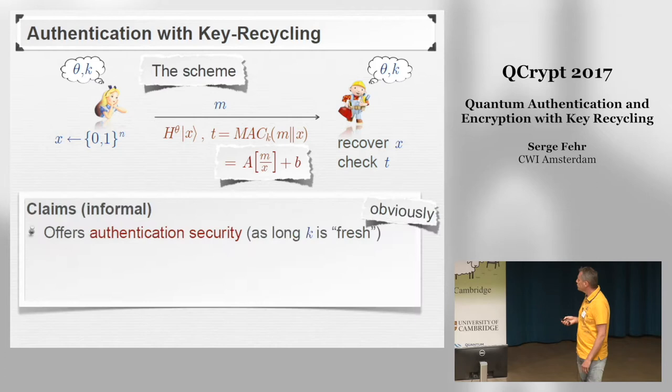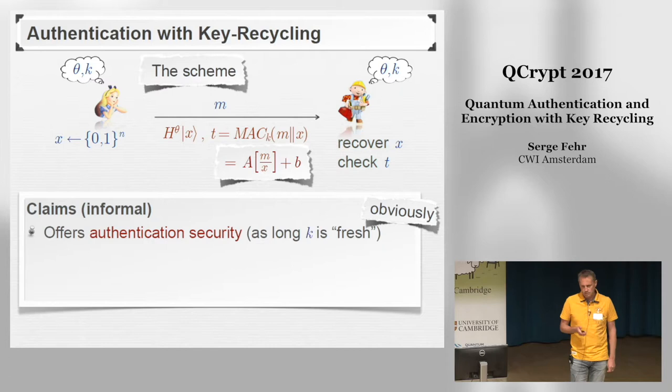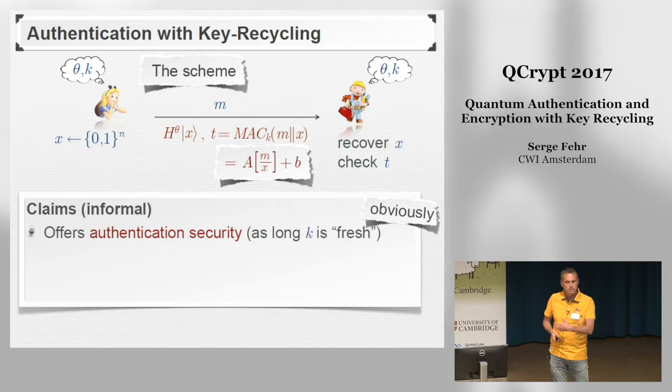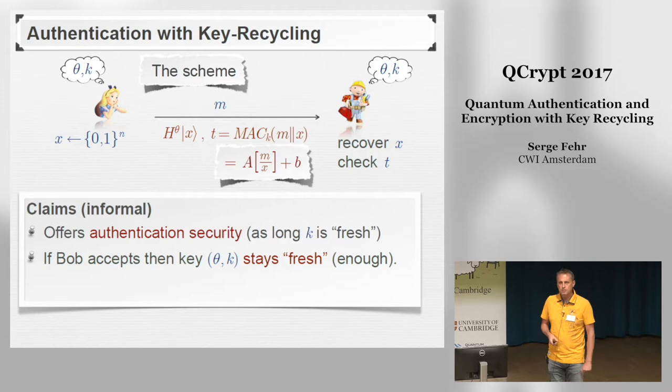What can we say about the security? First, it's obvious to see that it offers authentication security, at least as long as the key used for the classical message authentication code is fresh enough. I'm using a classical authentication code that is promised to protect the message as long as the key K is fresh. What is less obvious to see is that the key stays fresh if Bob accepts, so that they can reuse the same key again to authenticate the second message, the third message, and so on. This is what we have to prove.